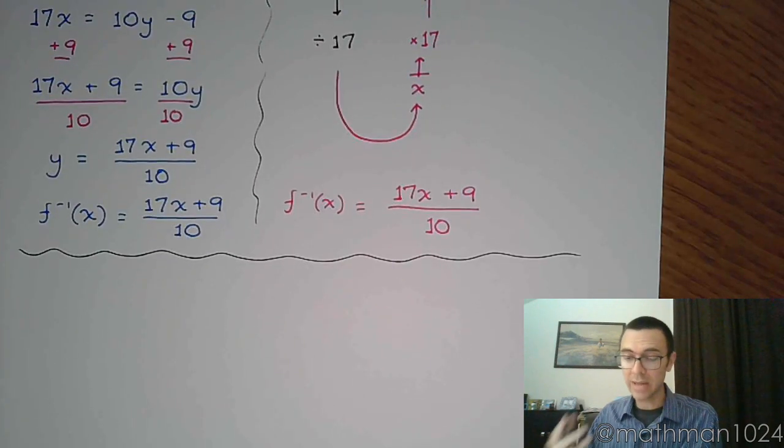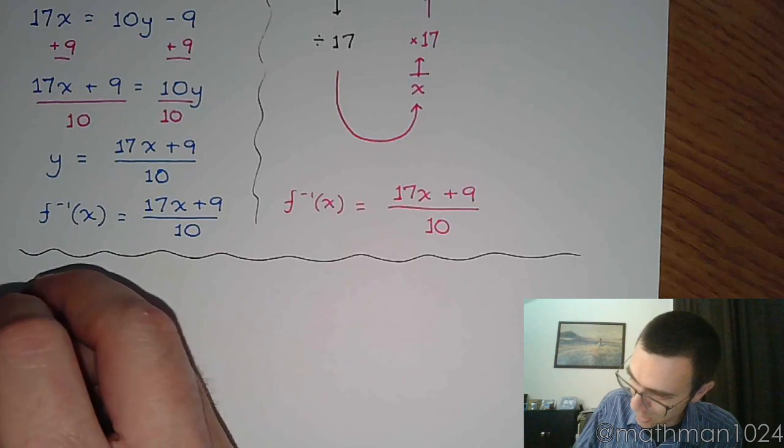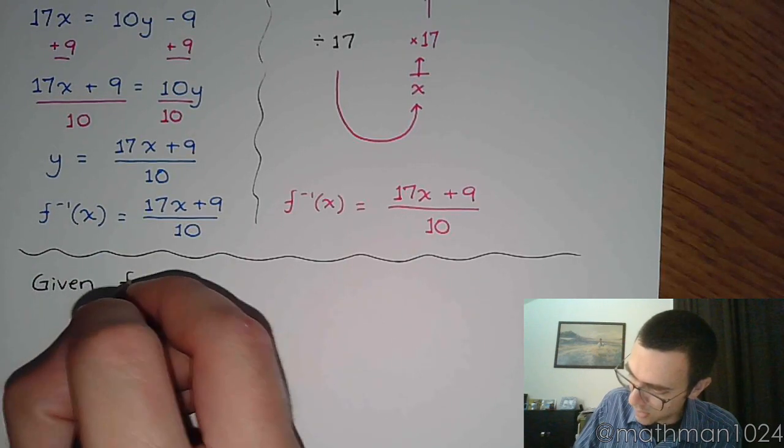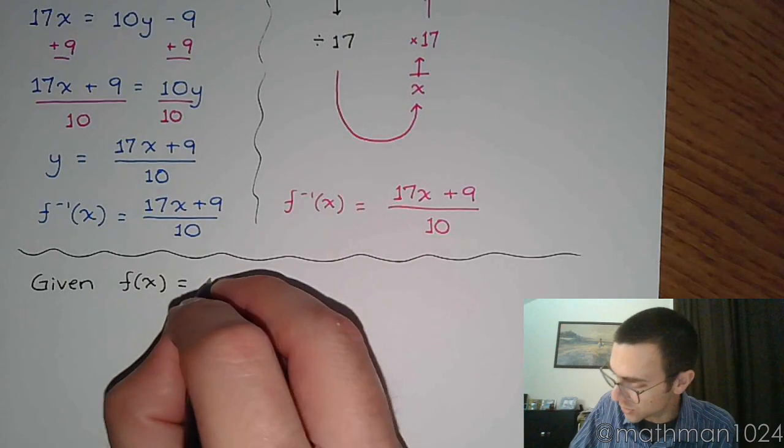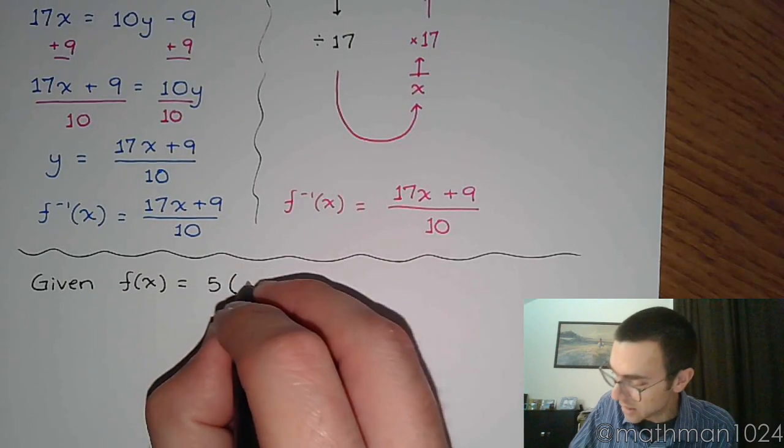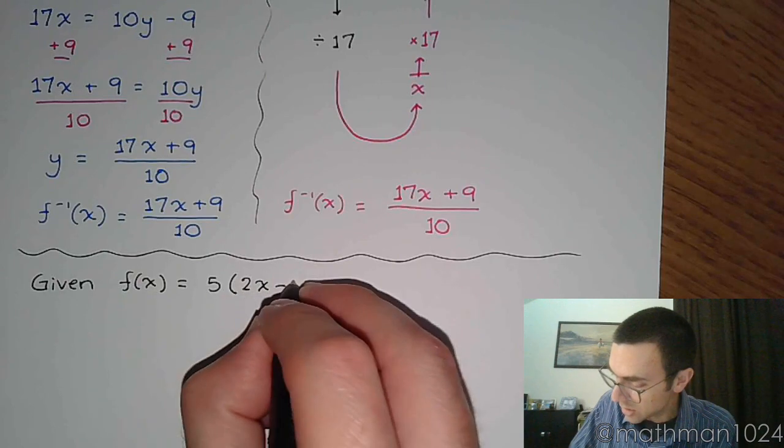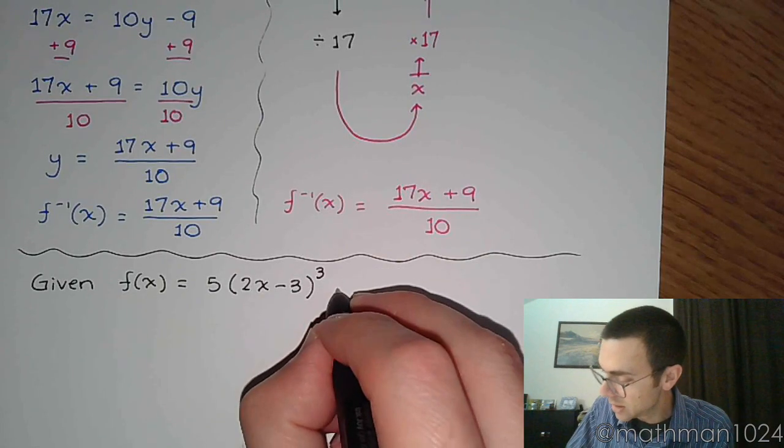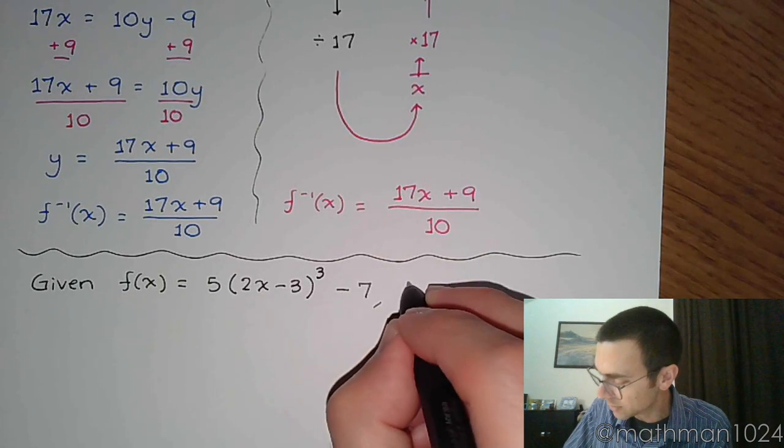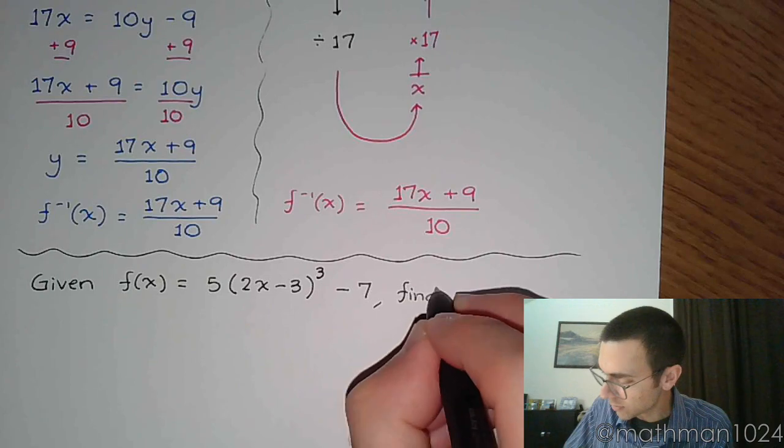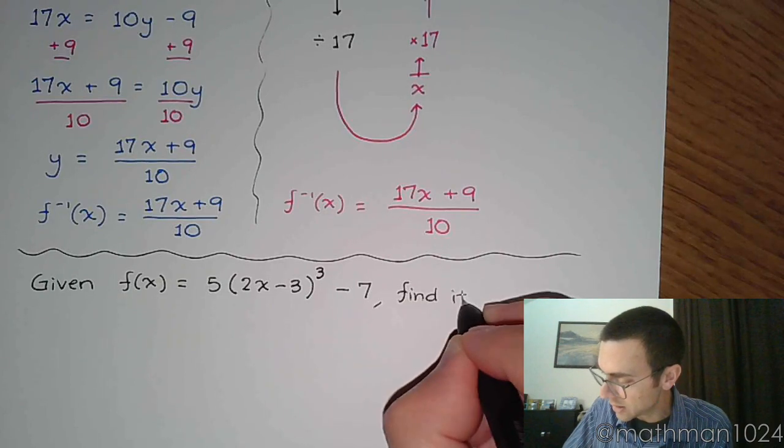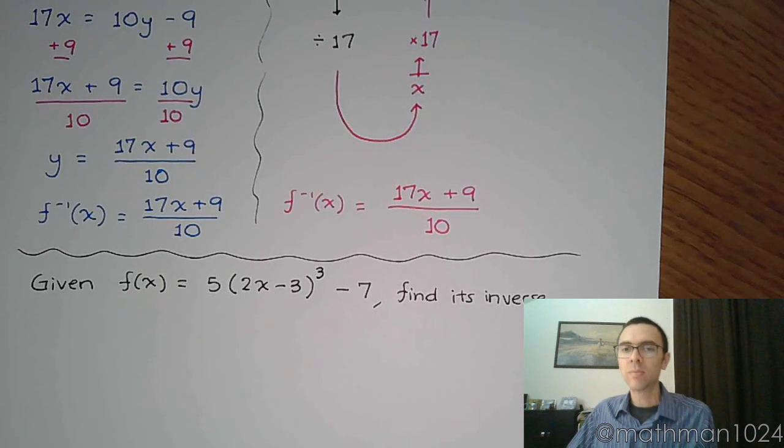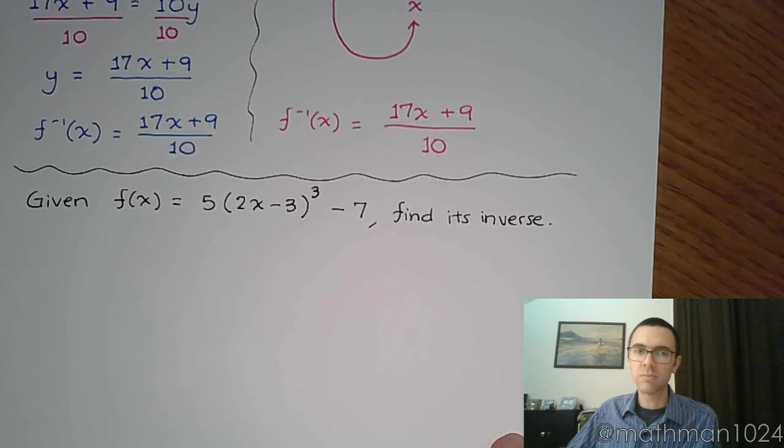All right, so if we are given f(x) is equal to 5 times (2x minus 3) quantity to the third minus 7, let's find its inverse.